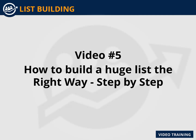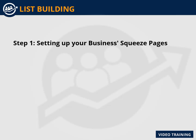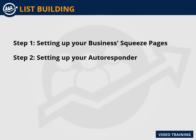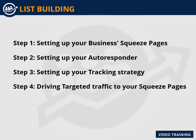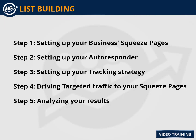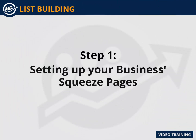Video 5: How to build a huge list the right way, step by step. Building a huge list the right way is not that difficult and does not take a lot of steps, but you really need to apply them in the correct order to get good results. The core necessary steps are: Step 1, setting up your business's squeeze pages and landing pages; Step 2, setting up your autoresponder; Step 3, setting up your tracking strategy; Step 4, driving targeted traffic to your squeeze pages and landing pages.